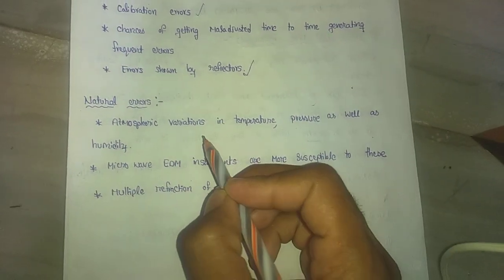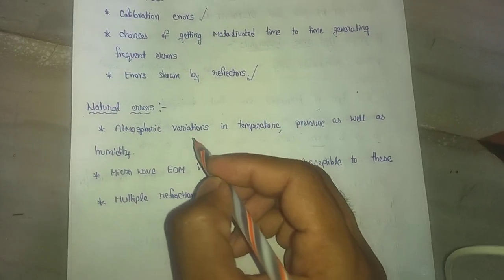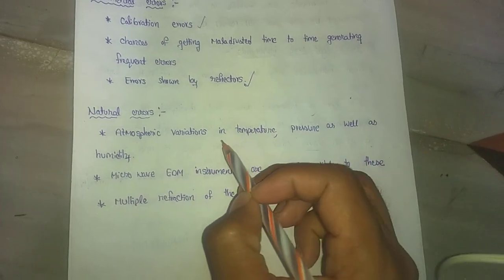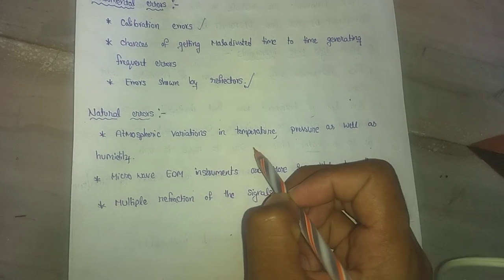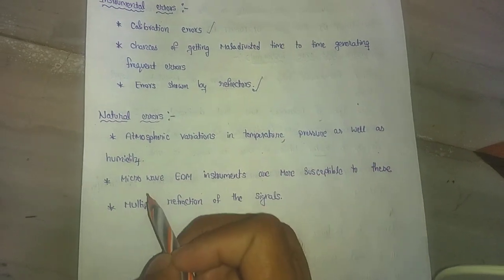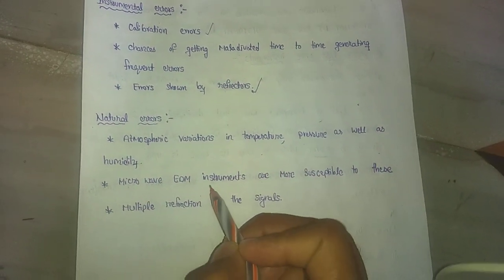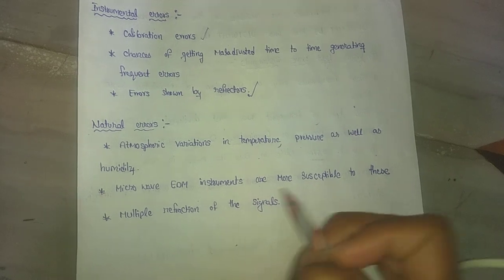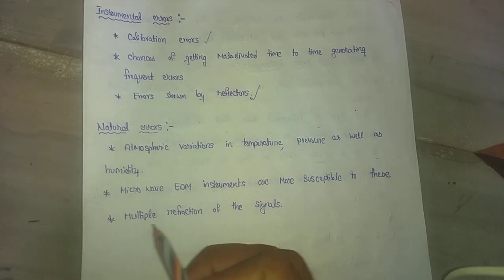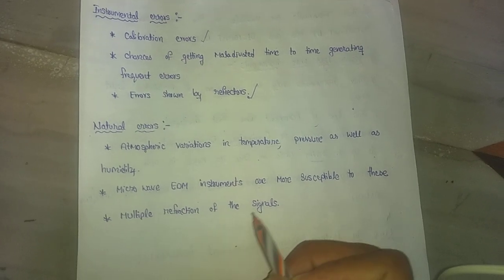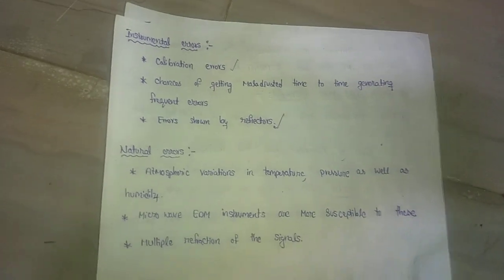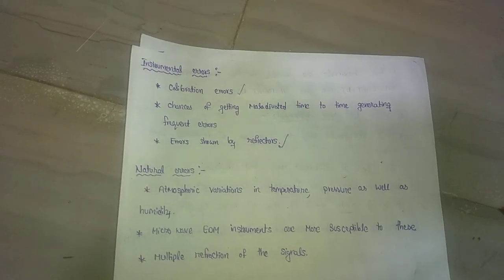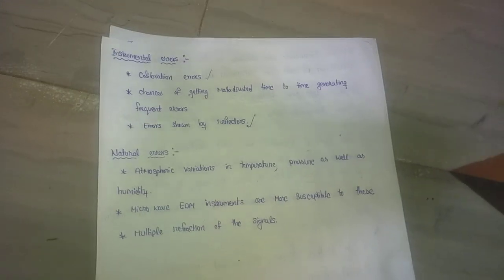Natural errors include atmospheric variations in temperature, pressure and humidity. Microwave EDM instruments are more susceptible to multiple refraction of signals. So natural errors contribute to inaccuracy in distance measurement.